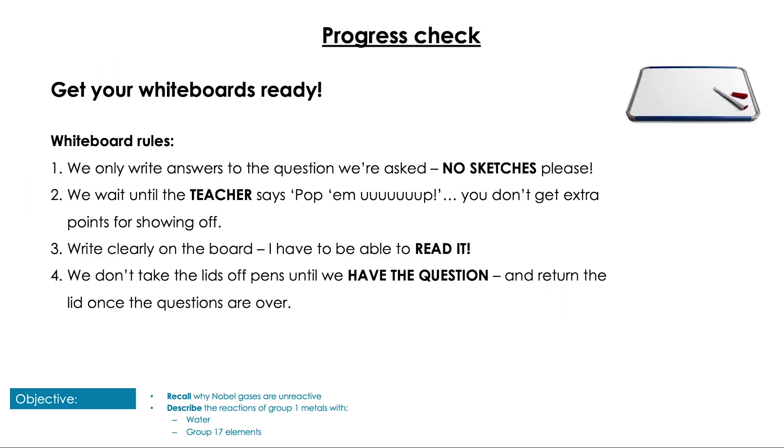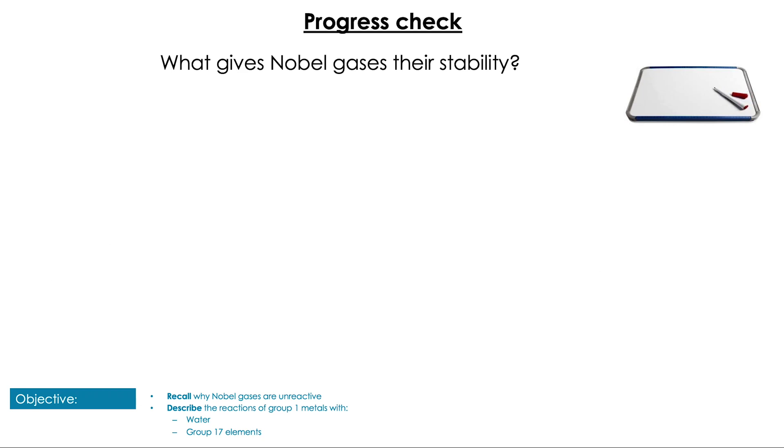Couple of quick questions on that before we look at the halogens. First question: what gives noble gases their stability? Of course, it's the full octet, their full outer shell that makes them so stable.